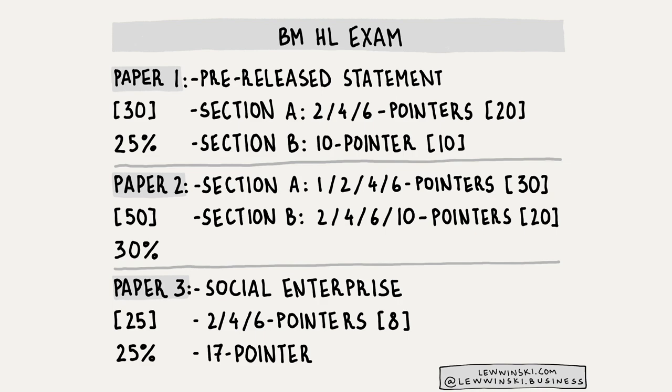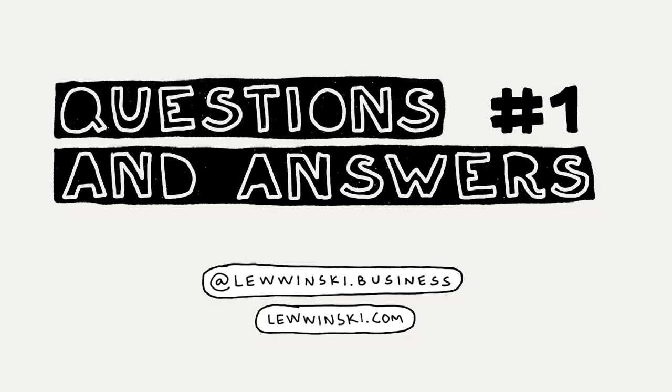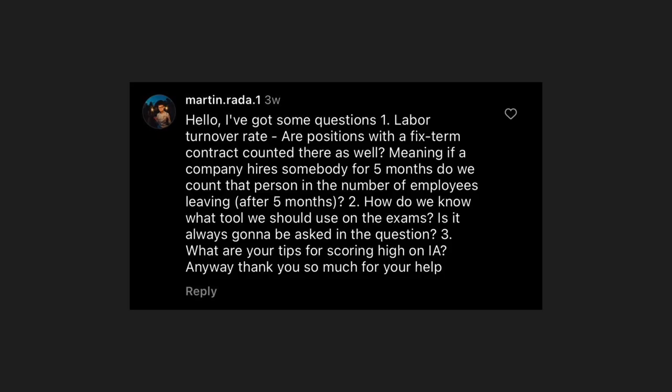Paper 3 is only for higher level students. It's worth 25 marks and 25% of your overall grade. This paper is based on a case study about a social enterprise — if you don't remember what that is, find video 1.2 on my YouTube channel. Paper 3 includes two-, four-, and six-point questions totaling eight marks, plus one 17-point extended response question about how to ensure sustainability of a social enterprise. Here's a summary — feel free to screenshot it and share with your classmates.